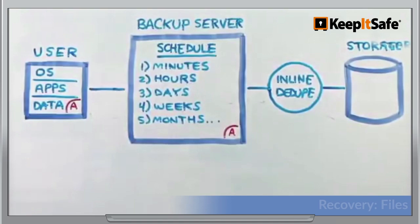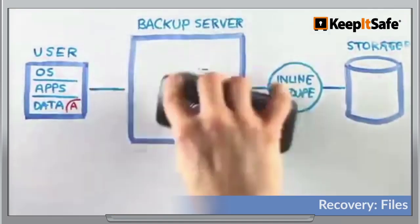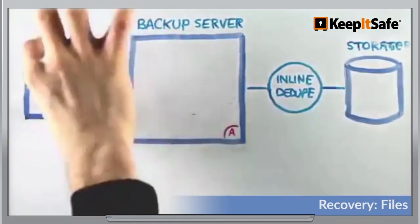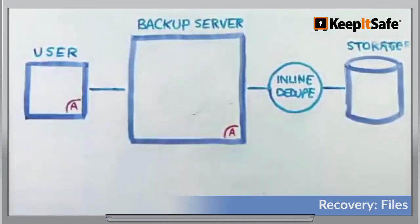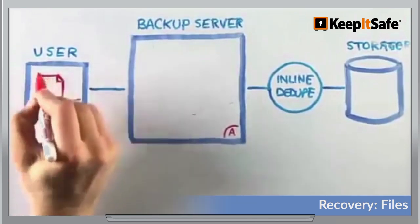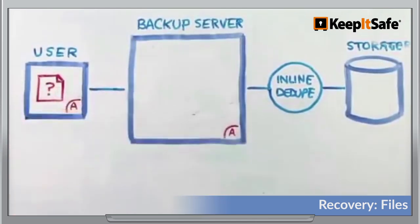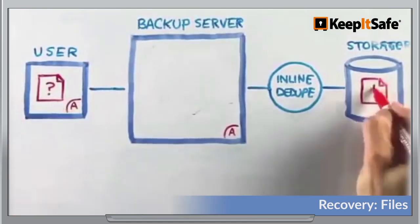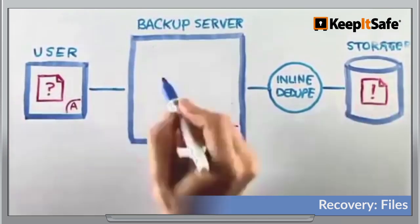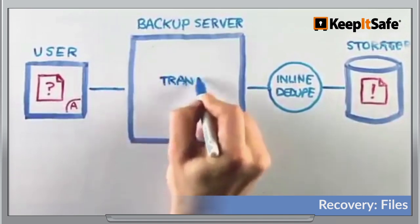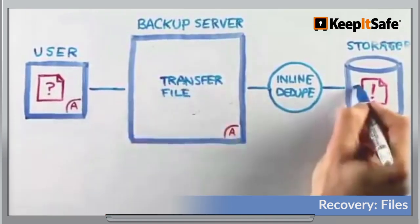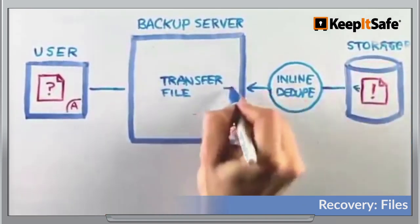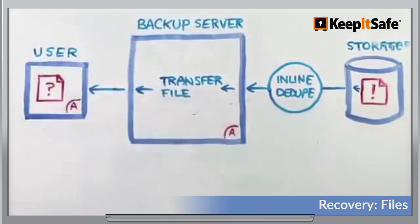So that's all about data going in. What about getting data out? It's just as easy and transparent. What if a file gets corrupted or lost on a user's machine? Keep It Safe DR simply transfers a clean version of the file from storage and the user is off and running.